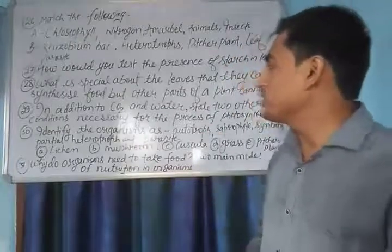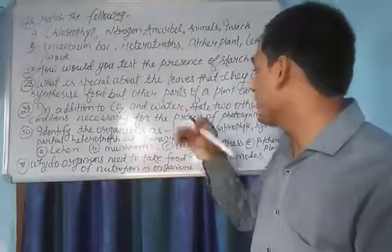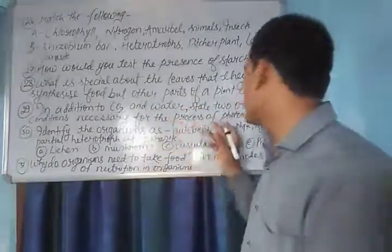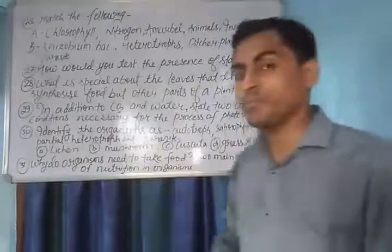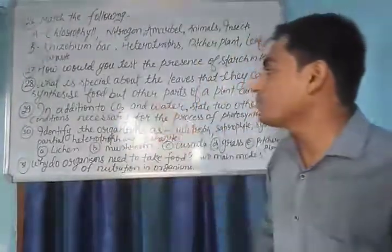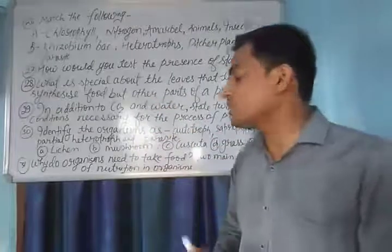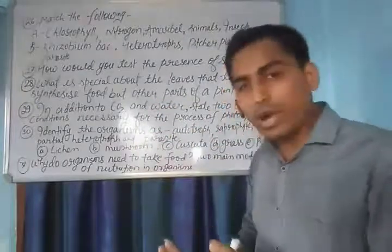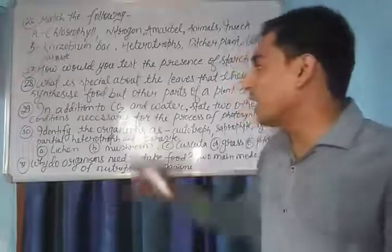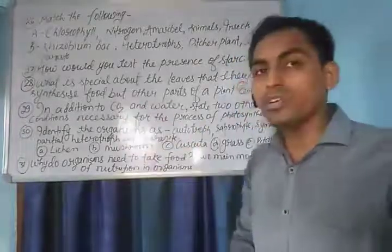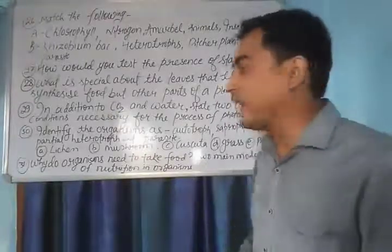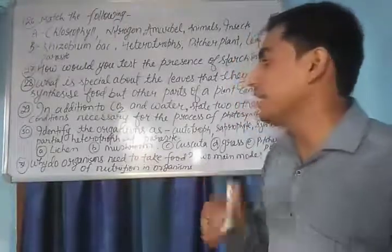Question number 29: In addition to carbon dioxide and water, state two other conditions necessary for the process of photosynthesis. We know that for photosynthesis, carbon dioxide, water, chlorophyll and sunlight are needed. Since carbon dioxide and water are already mentioned, the other two are chlorophyll and sunlight.